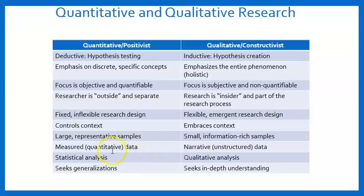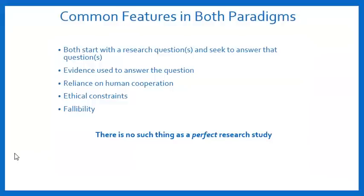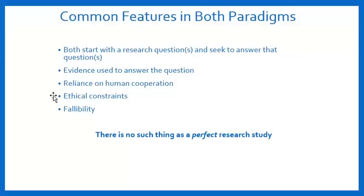The data differs too — numerical data versus narrative data. I'm not going to go through each individual component so as to keep this video from being too long. But importantly, both quantitative and qualitative research have similarities: there is no such thing as a perfect research study of either type. Both have limitations, both start with research questions and gather data to answer them, both rely on human cooperation requiring ethical considerations to protect participants, and both are fallible — no study is perfectly unbiased or error-free.